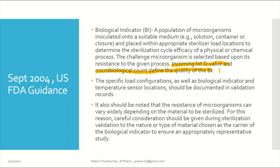The specific load configuration as well as biological indicator and temperature sensor locations should be documented in the validation record. It is very important to have documented BI and temperature sensor locations. If there is any failure during the sterilization cycle, you need to be able to identify which locations are giving wrong results. BIs should be properly labeled so that when they go to QC for testing, the lab can recognize which numbered BI is failing, and you can then correlate the location within the sterilizer or load — which is beneficial for investigations.